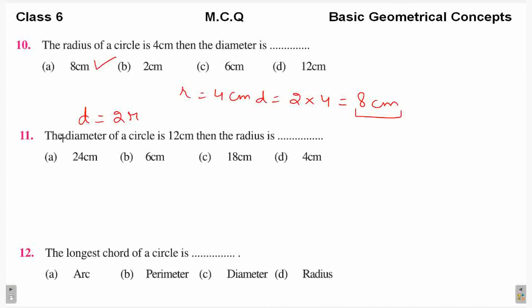Next, the diameter of a circle is 12 centimeters. D is given as 12 centimeters. Then radius is, so D is equal to 2R. So R will be R equals D by 2. So this is equal to 12 by 2 equals 6 centimeters. So B is the answer.